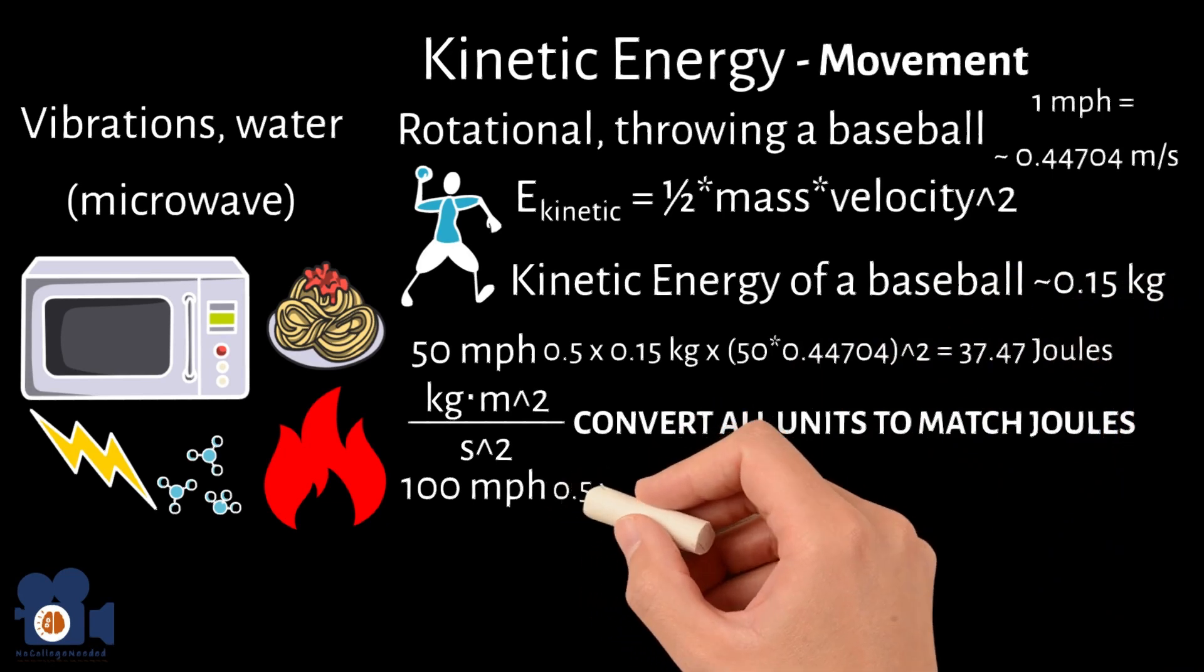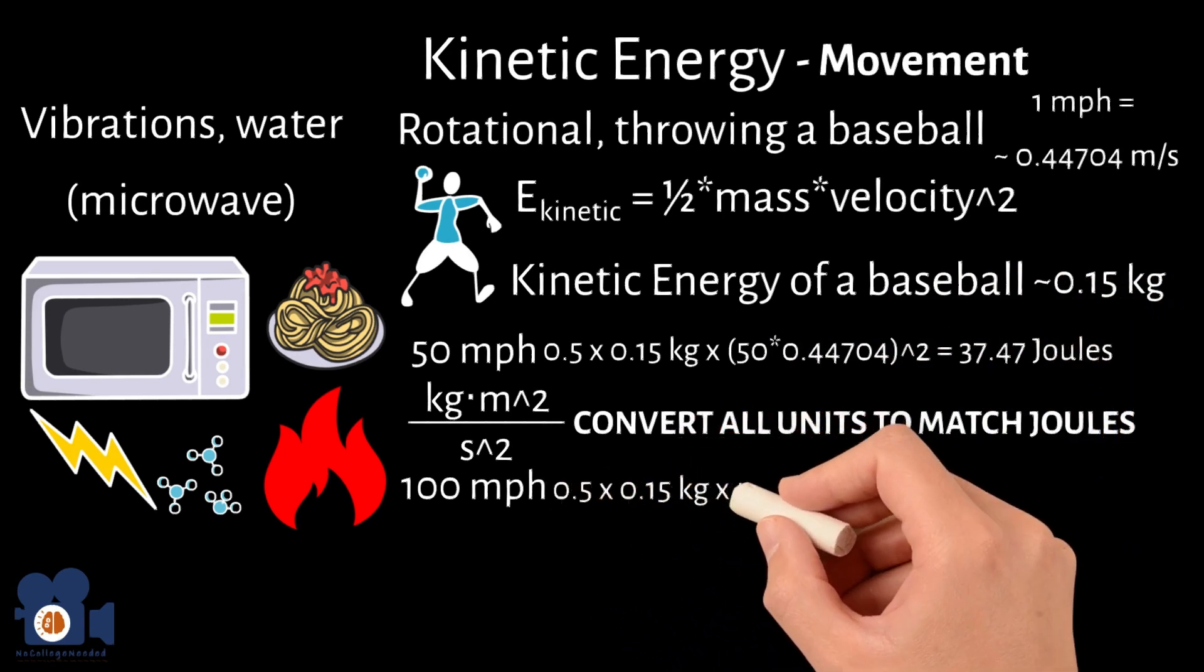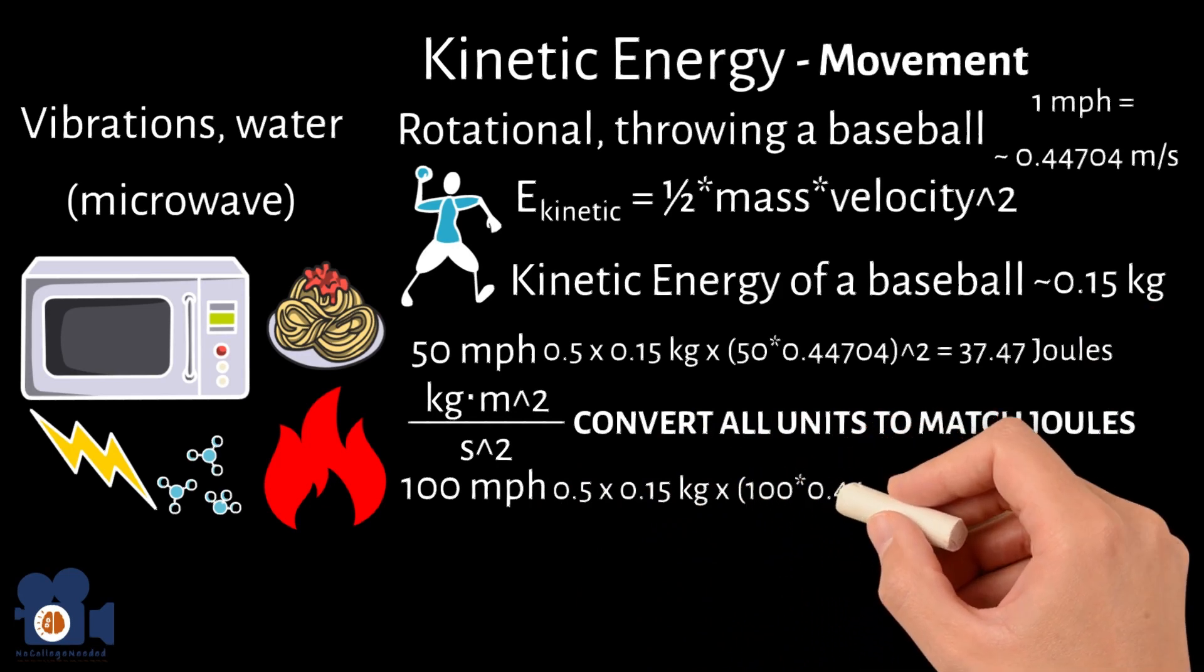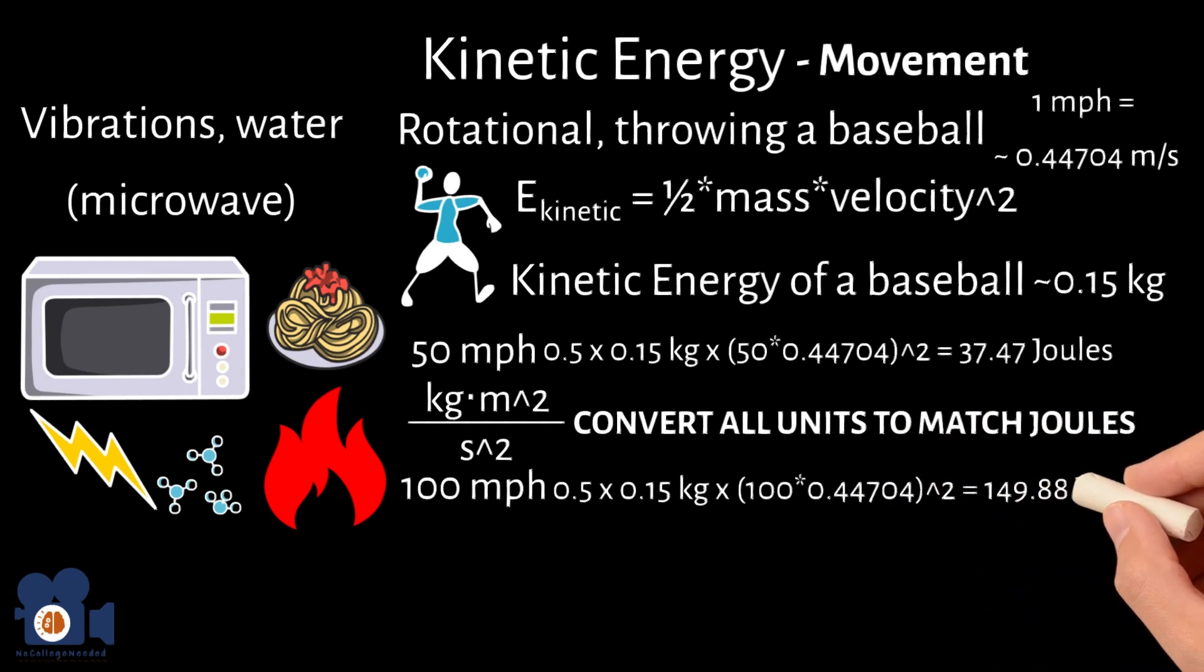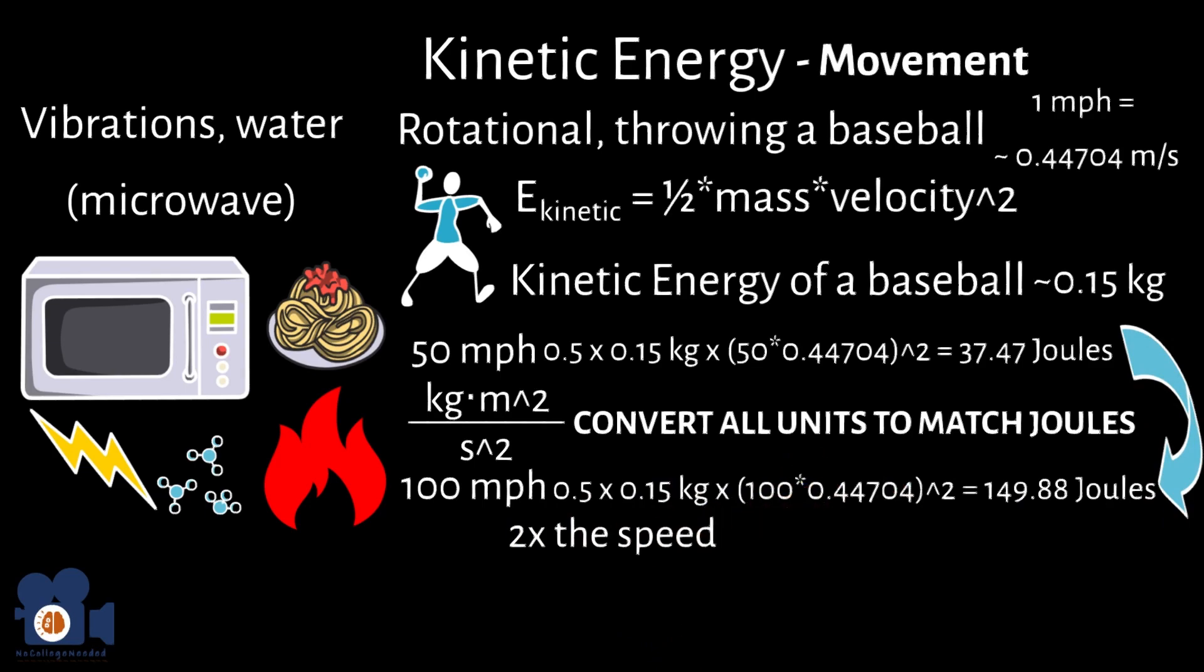And 0.5 times 0.15 times 100 times 0.44704 squared equals 149.88 Joules. Because the velocity is squared, even though one baseball is moving twice as fast as the other, it has four times as much kinetic energy.